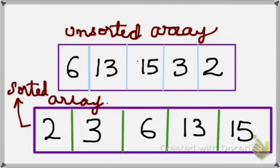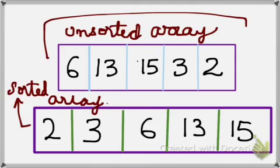An unsorted array is what you see in the top part of this page. The elements are in a random order. Whereas in a sorted array you can find all the elements in a sorted order: 2, 3, 6, 13, and 15. Binary search is applicable only when the array is sorted.